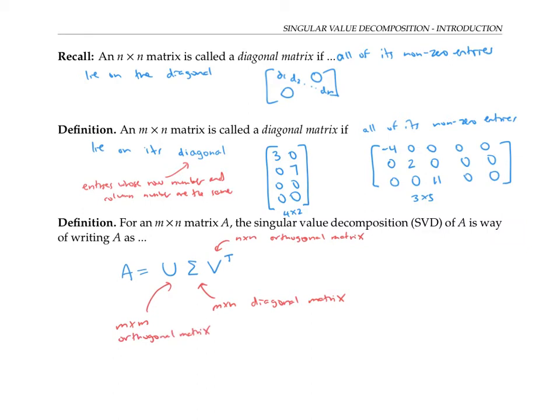Let me draw these matrices with squares and rectangles to illustrate the dimensions. Here's A, an m by n matrix. Here's U, an m by m square matrix. Σ is an m by n matrix just like A, and V transpose is an n by n matrix. And actually, V is also n by n.